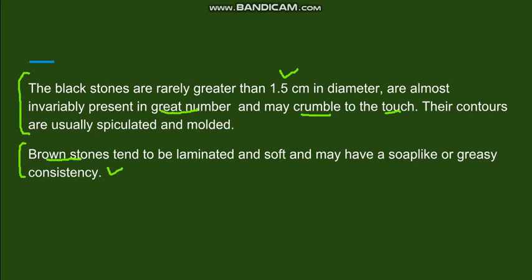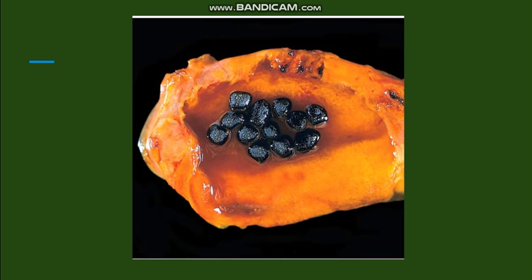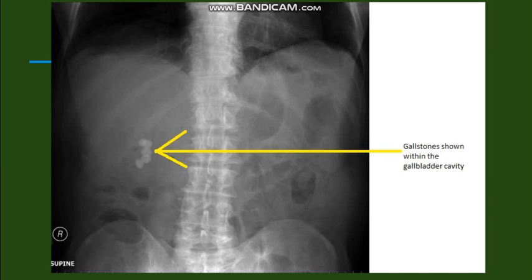Brown pigment stones are found in infected bile. This picture shows the black pigment stones. Pigment stones are radio-opaque, not radiolucent, because they are formed in conjunction with inorganic calcium salts, and they can be seen on X-ray.